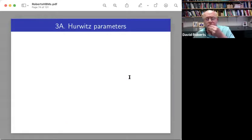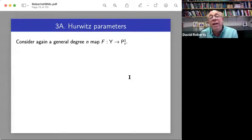Section three. So looking back on lectures one through five, not much prepared you for this section. I'm going to go a bit fast and furious at times. All right. So let's consider again a general degree n map.